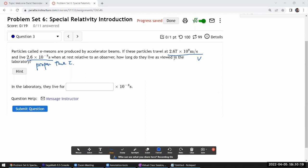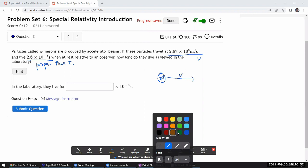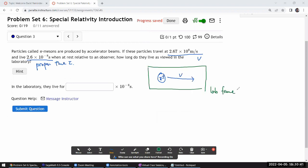It asks how long they live as viewed in the laboratory, so in the reference frame where these mesons are moving with some speed v. This is the view in the lab frame.